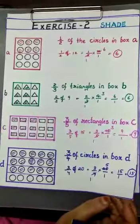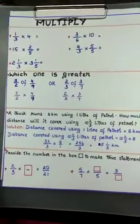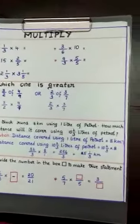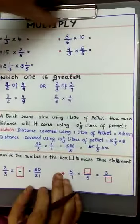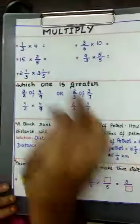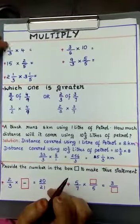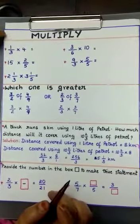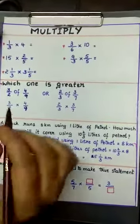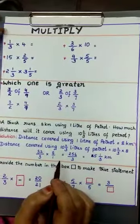Children, did you enjoy this? Now come to the next one — some more exercise sums. Multiply. Remember one thing: whenever you are multiplying fractions, don't simplify directly the numerators together and the denominators together. You have to simplify one numerator and one denominator using their common factor.